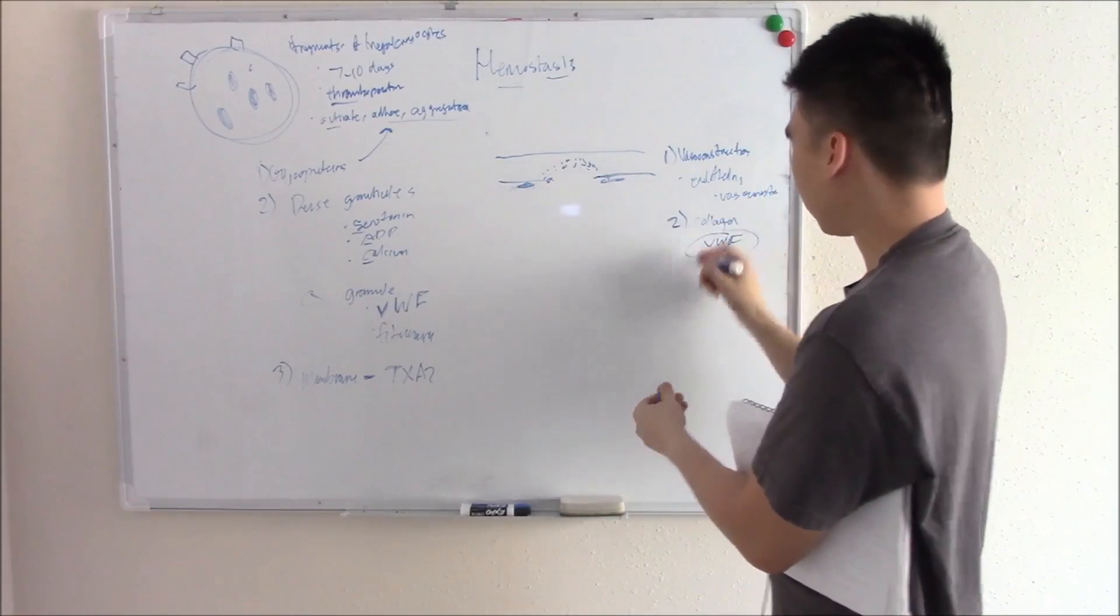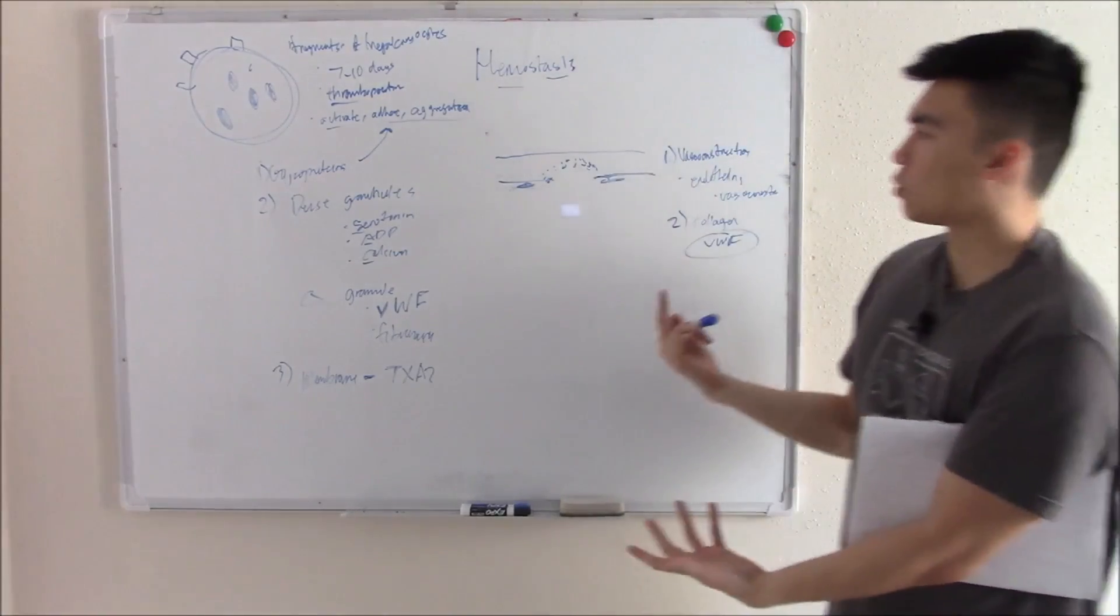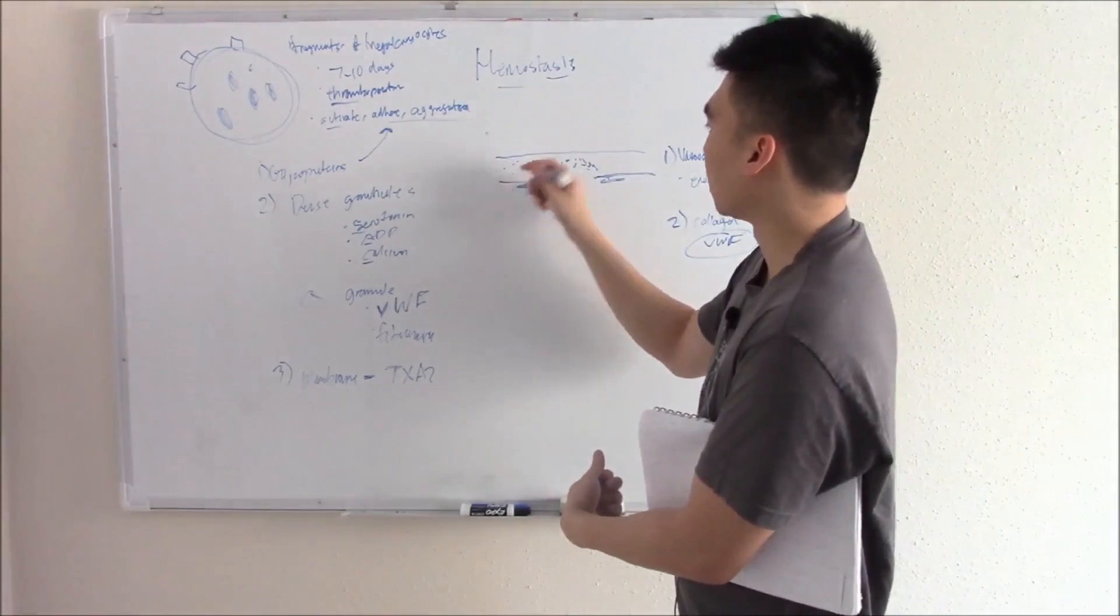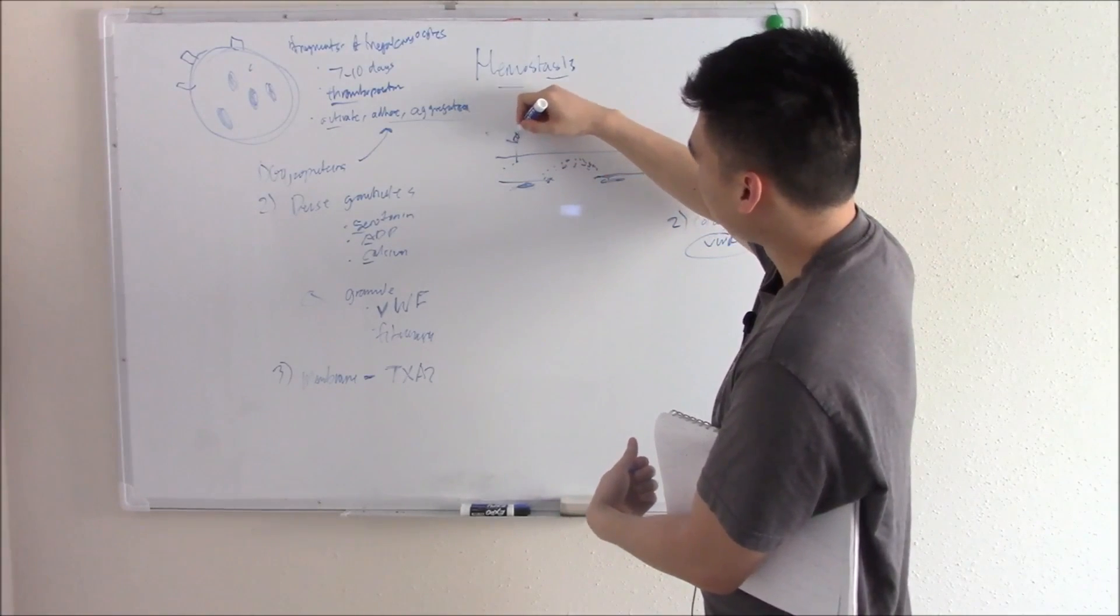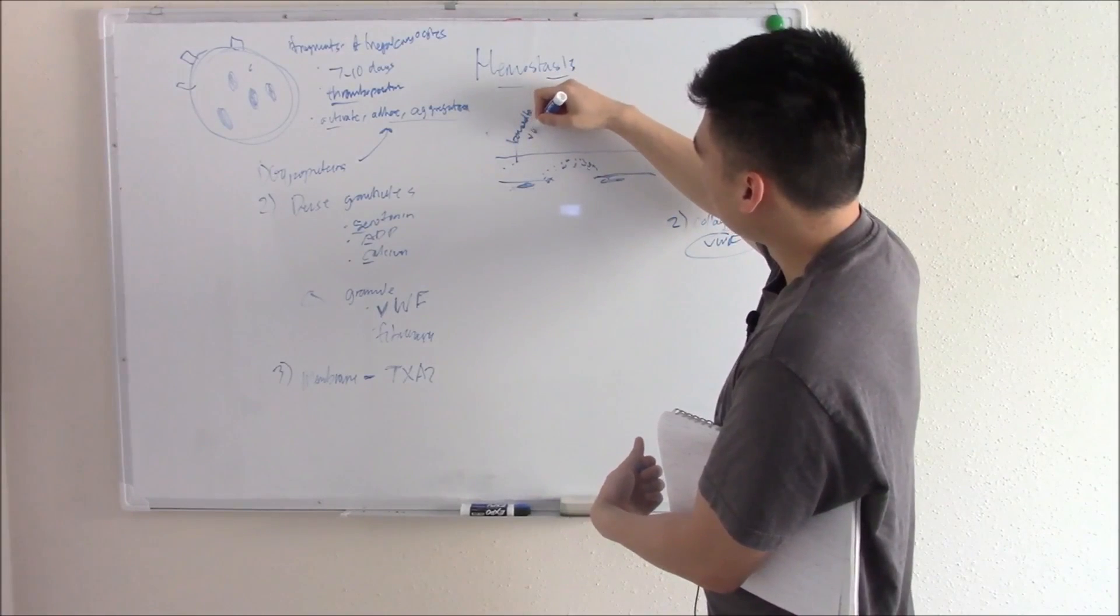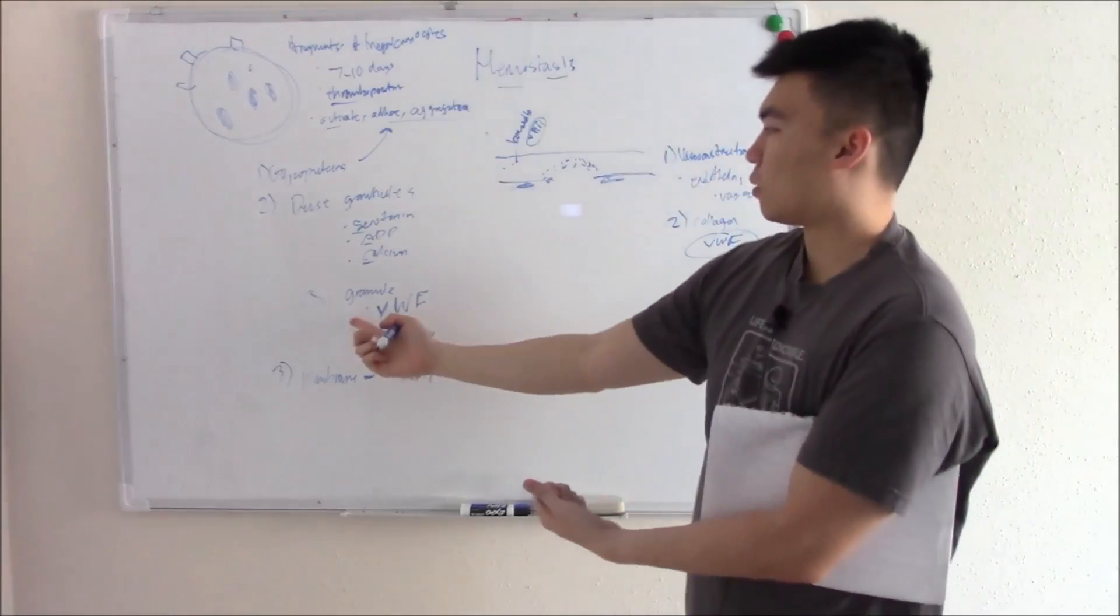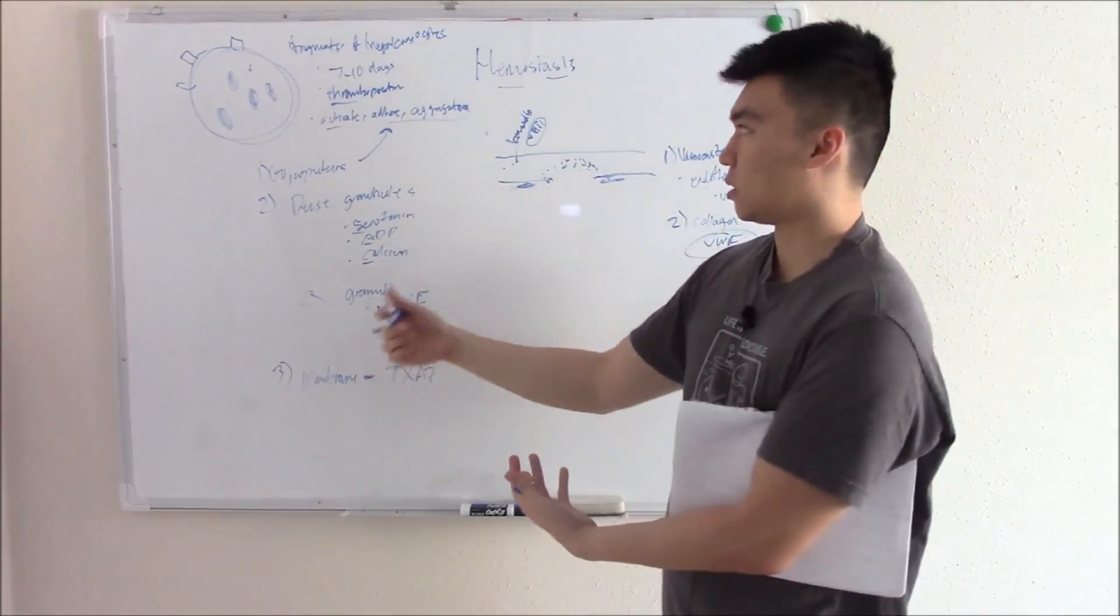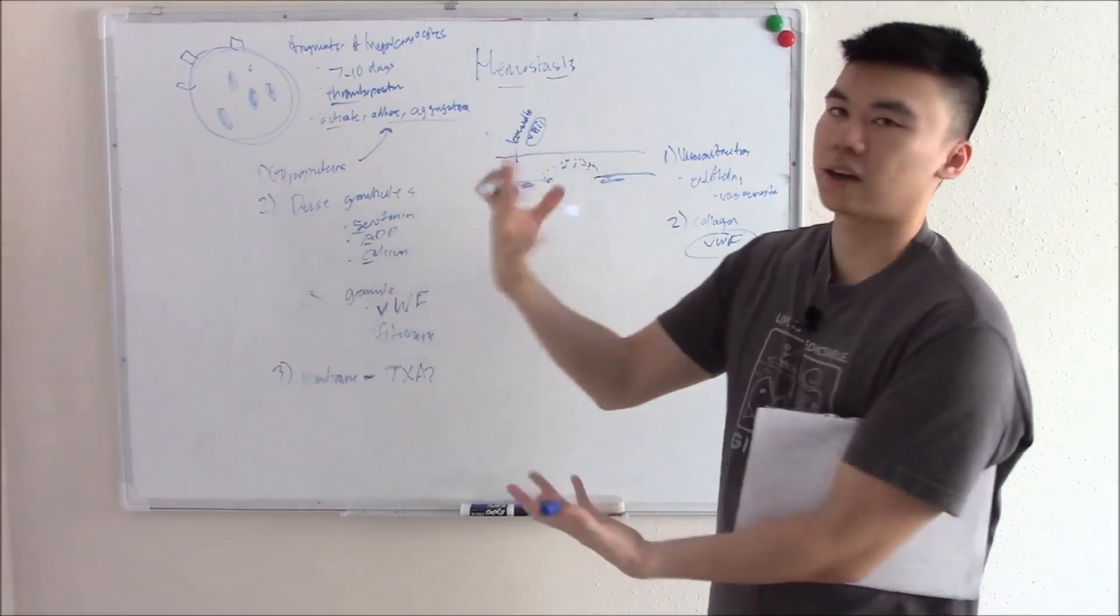Von Willebrand factor is found everywhere, in basically all the players in the game. You have von Willebrand factor floating around in your plasma bound to factor VIII, that just stabilizes it. Von Willebrand factor is found in your platelets. It's found in your endothelium, found everywhere.